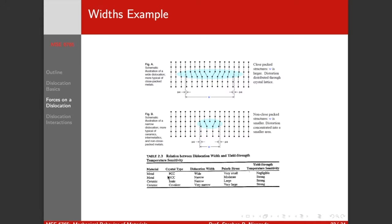FCC metals have very wide dislocation widths, very small Peierls stress. You can imagine that this is much easier to move than this dislocation, and it has much smaller temperature sensitivity. Compare that to ionic ceramics or even covalent ceramics, where our width is very small. Our distortion is smacked in there into a very close area. We have very large Peierls stresses that are difficult to move, and they gain a very strong temperature dependence.